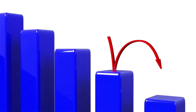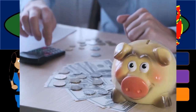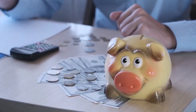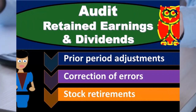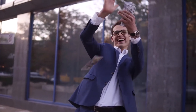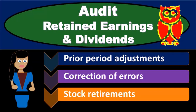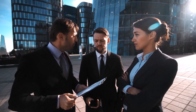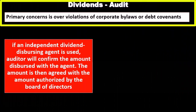Retained earnings shouldn't have many transactions in a normal year. If nothing unusual happened, retained earnings should be what it was at year-end, adjusted only for dividends paid out and net income rolling over. That means it's fairly simple to audit — we can consider all transactions using a substantive type procedural process.